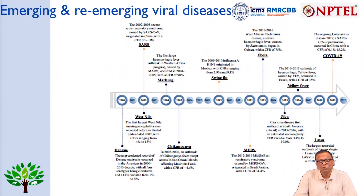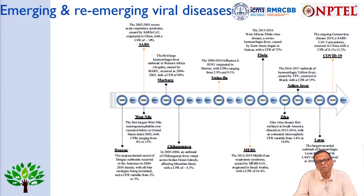This slide covers emerging and re-emerging viral diseases. On the extreme left we have dengue, followed by the West Nile virus, then the first SARS virus, with reported fatality rates listed against each — quite variable across diseases. From dengue to the present COVID-19, a number of diseases are listed including Marburg virus, chikungunya, swine flu, MERS, Ebola, Zika, and yellow fever.